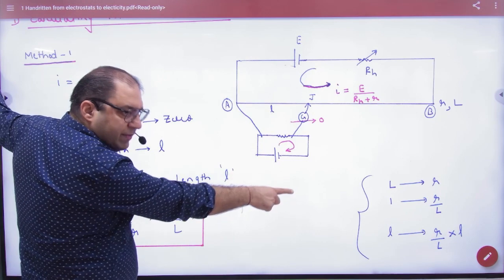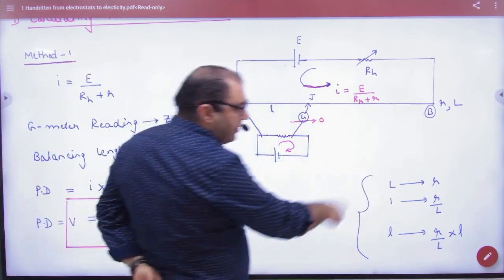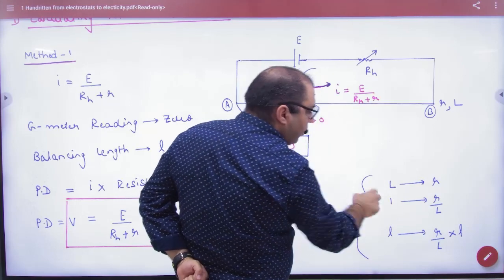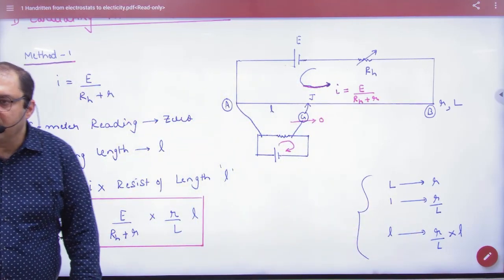And the resistance of length L, I told you that if this length is L, then resistance is R. If it is R by L, and if it is L, then it is R by L into small L. So the answer is here. We have already done this.